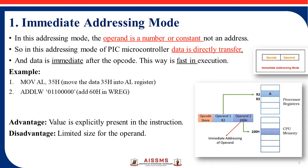The advantage of immediate addressing mode is that the value is explicitly present in the instruction — for example, the value 35H or binary numbers are directly present. The disadvantage is that there is a limited size for the operand; the data size is limited. That is immediate addressing mode.